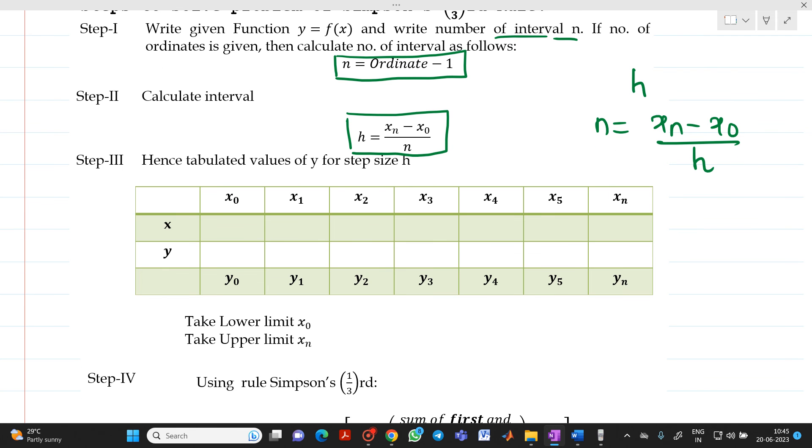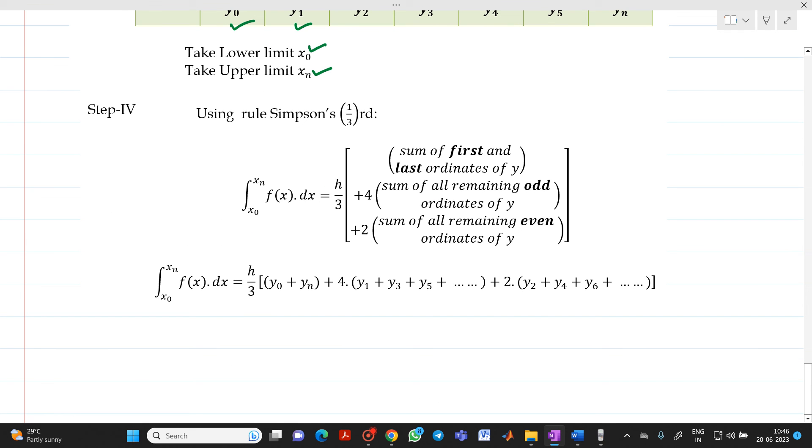So, based on the function, whatever it will be your function, y equal to f(x), you put there x equal to x0, you will get answer of y0. You put in the function x equal to x1, you will get answer y equal to y1. Likewise, you have to do up to xn and yn. Then, up to xn and yn because lower limit starts from x0 and upper limit ends at xn. After that, use Simpson's one third formula for getting the answer.